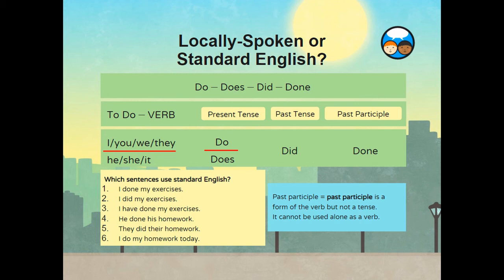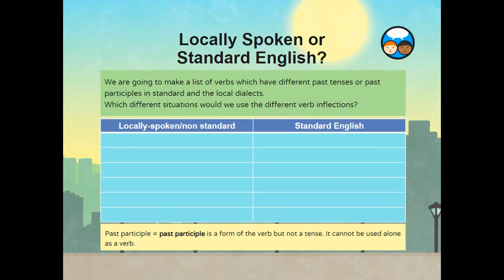The past participle form of a verb is a form of the verb, but not the tense — it cannot be used alone as a verb. Now we are going to make a list of verbs which have different past tenses or past participles in standard and local dialects. Which different situations would we use the different verb inflections? Remember that the past participle of a verb is a form of a verb, but not a tense; it cannot be used alone as a verb.